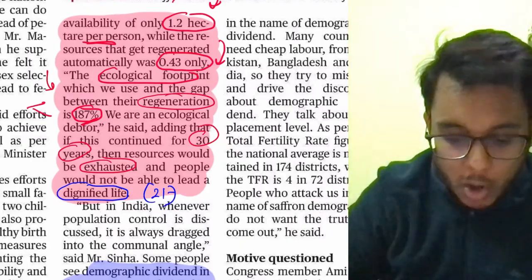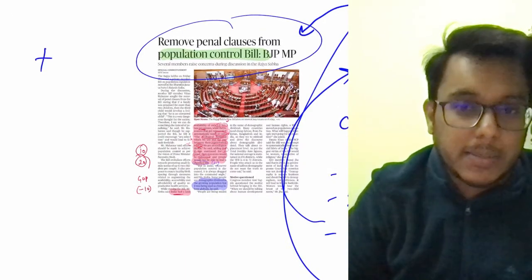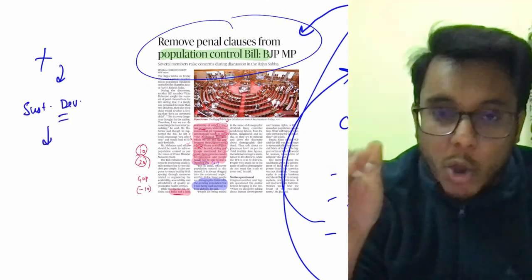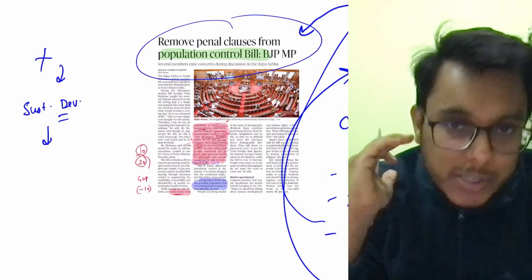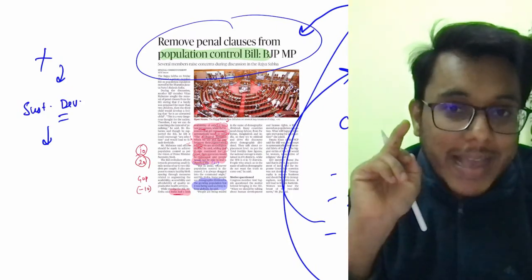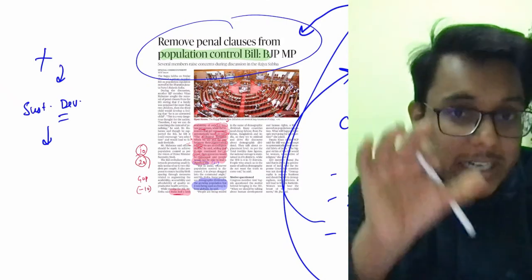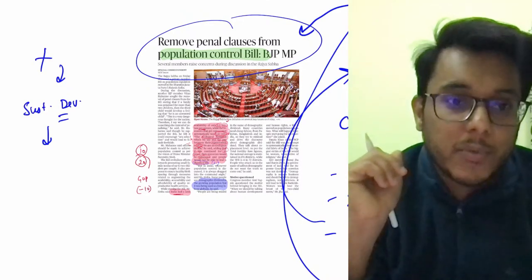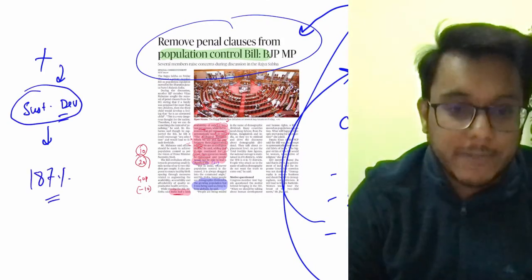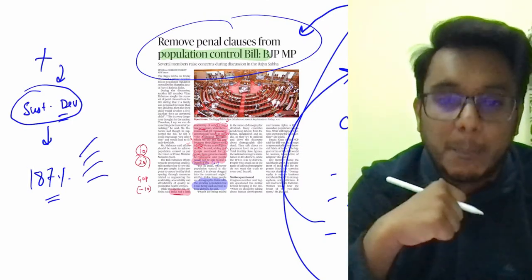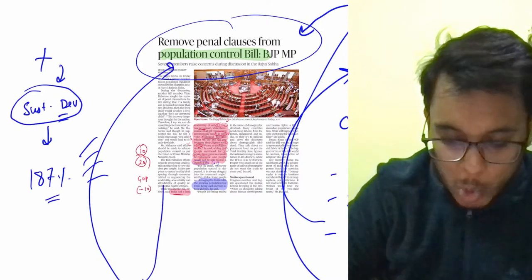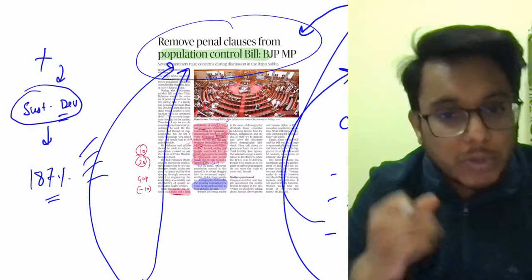The bill proposes that if people have more than two children, there should be punishment. But consider the opposition: India is in the golden window of demographic dividend from 2020 to 2040, with an average population age of around 29 years. Restricting population could lead to immature demographic transition, preventing us from fully leveraging our young population. NFHS-5 (National Family Health Survey 5) data shows India's Total Fertility Rate is 2.0, already below the replacement rate of 2.1 needed to stabilize population — so a population control bill is unnecessary.